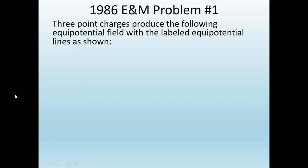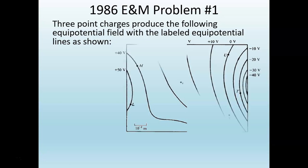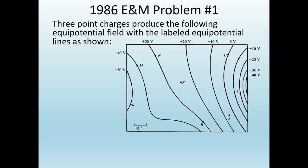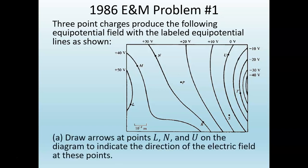In this video, I'm going to go over problem number one from the 1986 AP Physics C E&M AP exam. Here's what the problem stated: it had three charges producing the following equipotential field with these equipotential lines as shown, labeled with the electric potentials. We also have a number of different points labeled on the diagram. Part A asks us to